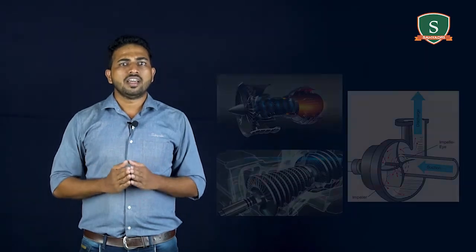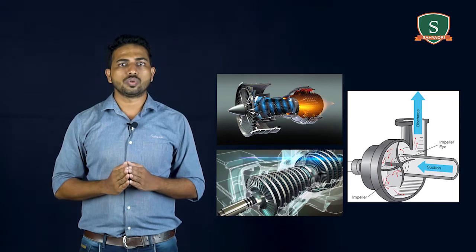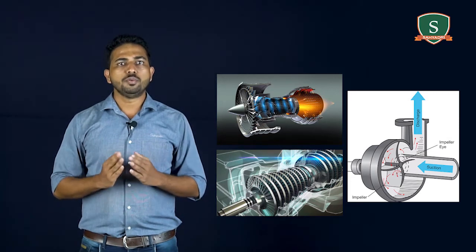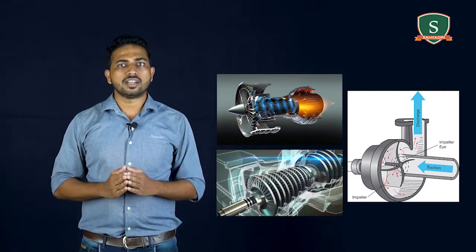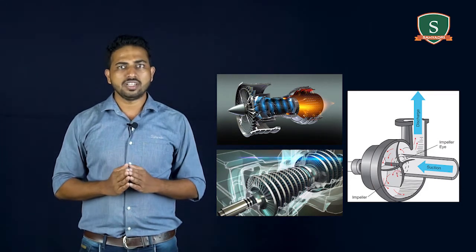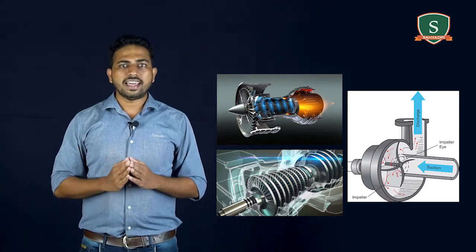Now, module number one, the introduction part. A fluid machine or turbo machine is a device which converts the energy stored by the fluid into mechanical energy or vice versa. The energy stored by the fluid mass appears in the form of potential, kinetic, and intermolecular energy.